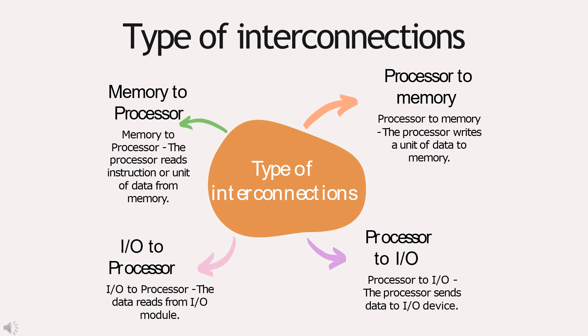Now, let's look at types of interconnections. There are four types. First is the memory to processor in which the processor reads the instruction or unit of data from the memory. Second is the processor to memory. In this, the processor writes an instruction or data to memory.